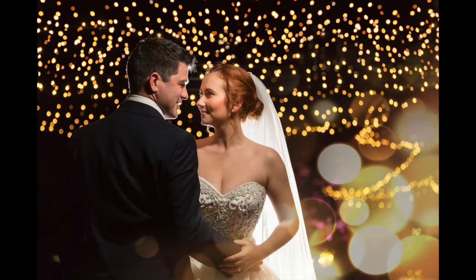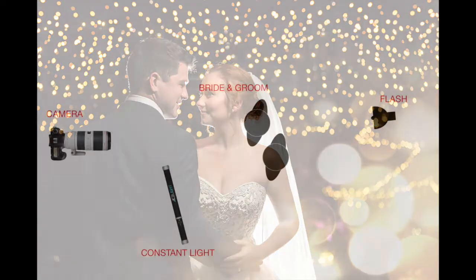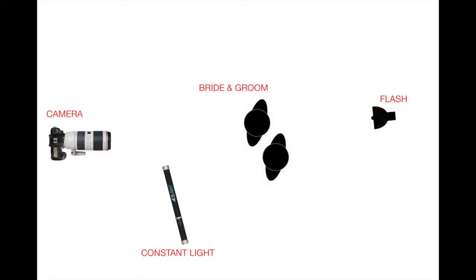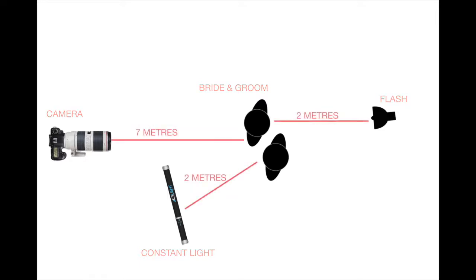Our first slide shows us the position of the bride and groom, as well as the position of the flash, the camera, and my LED constant light. This next slide shows you the distances of the flash, the LED constant light, and my camera from the bride and groom.